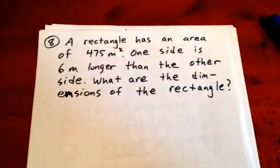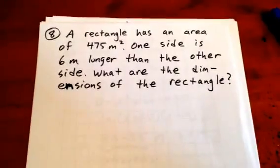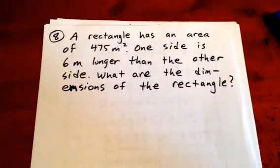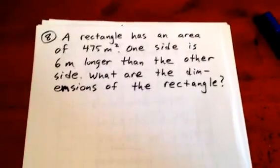In this question we see that a rectangle has an area of 475 meters squared and there's a further piece of information that one side is 6 meters longer than the other side. We want to know the dimensions of the rectangle.